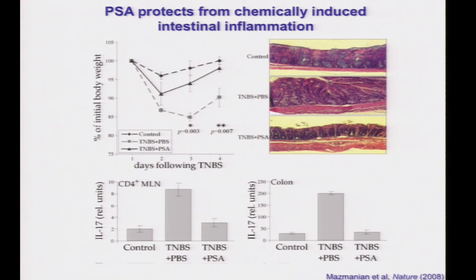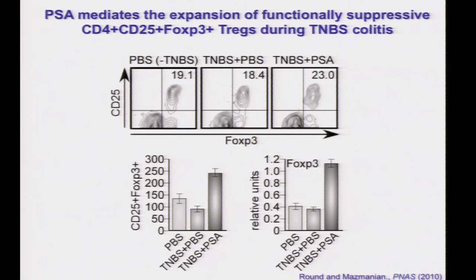We've looked at the immune response. There's an increase in TH17 cells — IL-17-producing CD4-positive T cells — in the TNBS colitic animals, but these are highly reduced in animals treated with the polysaccharide. We wondered what the mechanism was. It appears that PSA doesn't cripple the pro-inflammatory immune system; it actually activates other arms, specifically regulatory T cells.